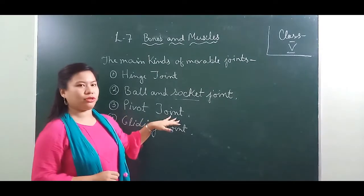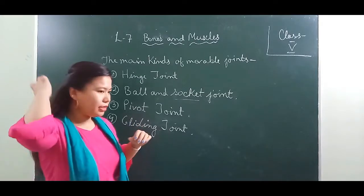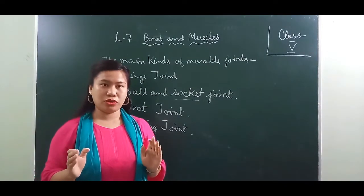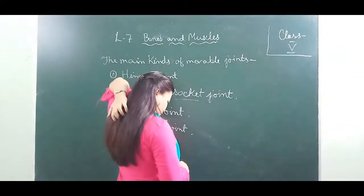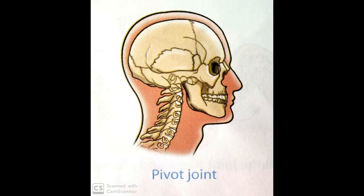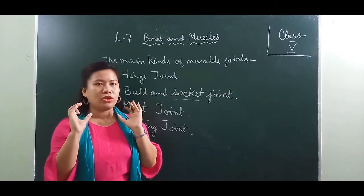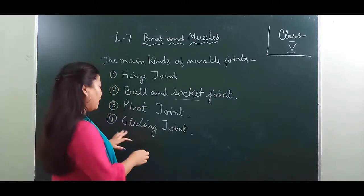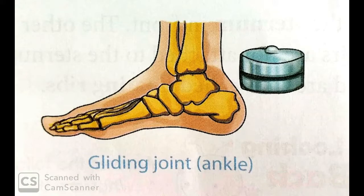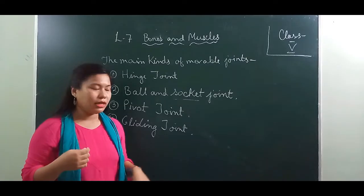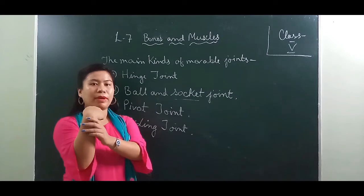The pivot joint is the joint between the first and second vertebrae of the backbone. It allows the head to turn left and right and to move up and down. The gliding joint is where bones slide over each other; it is present in the wrists and ankles and allows side-to-side as well as back-and-forward movement.